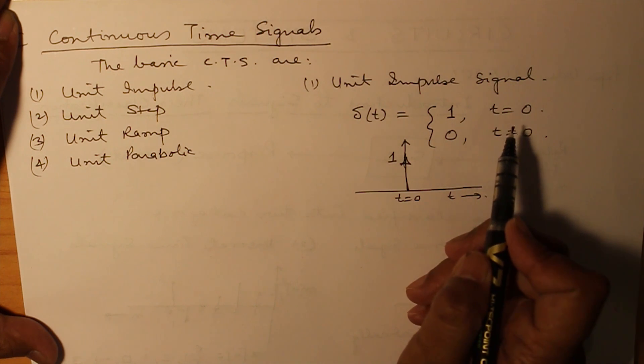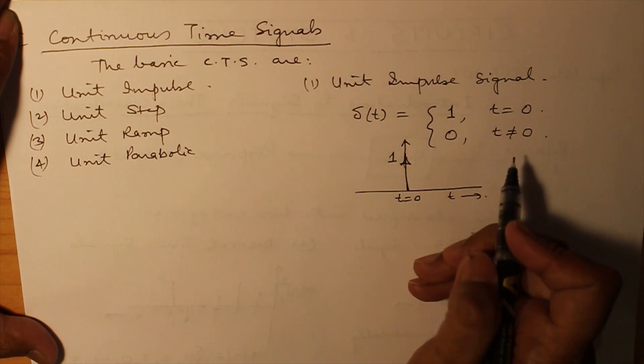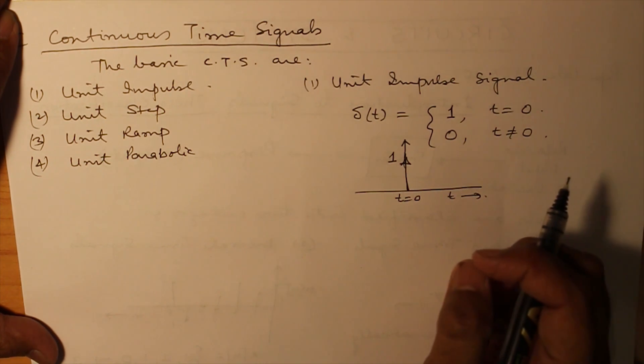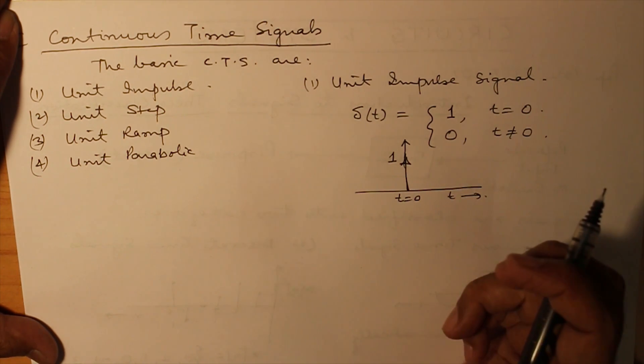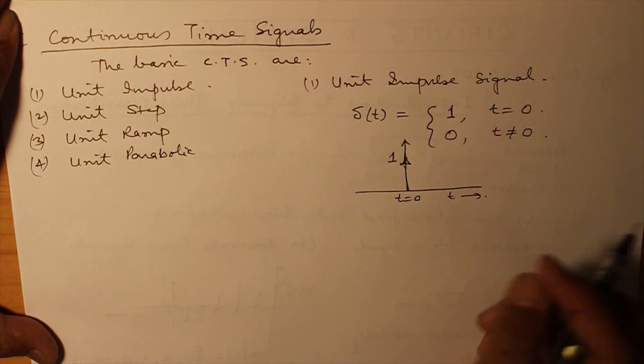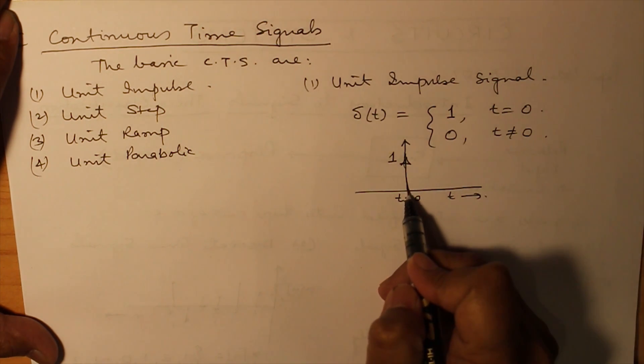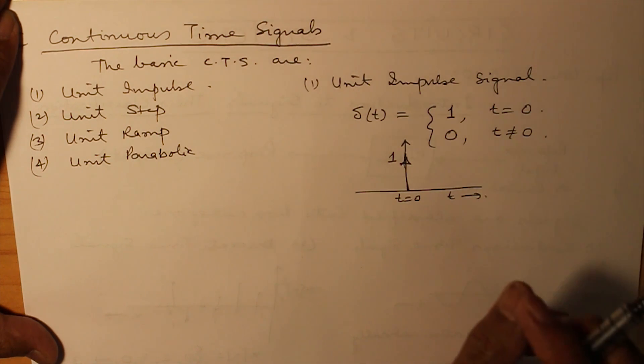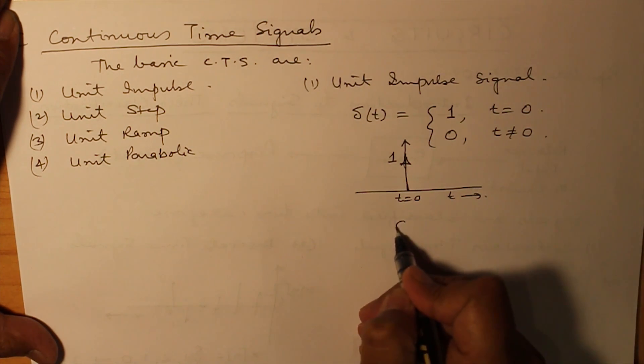A unit impulse signal can be perceived as if there is a very large value of force or there is a very large value of energy which is getting transmitted over a very infinitesimally small interval of time. Now, let us suppose that infinitesimally small interval of time is represented by epsilon.